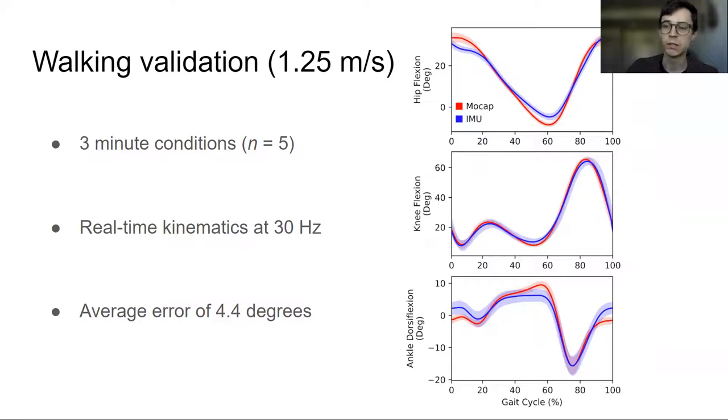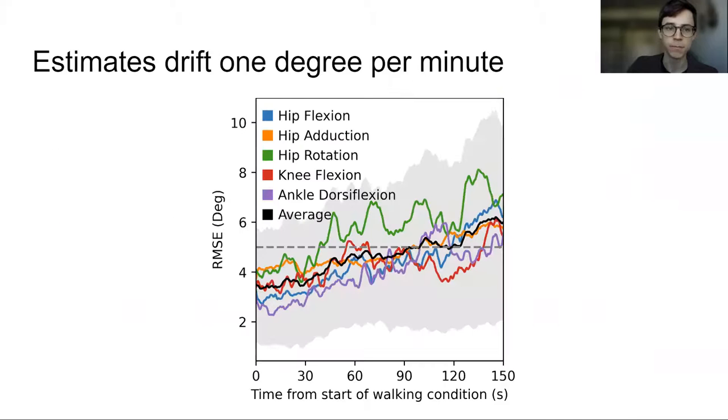If you want to see additional details about this or about a running analysis we did, I would recommend you check out our preprint. On average we saw that the joint estimates drifted by about one degree per minute, so after several minutes we recommend that you recalibrate, and this is pretty simple since you just do the standing recalibration.